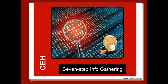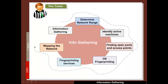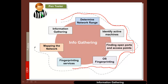So what is the seven-step information gathering process? For a pen tester we go through each of these stages, going from passive information gathering to more active ones. The first stage is basic passive information gathering, then determining the range of the network where our devices are, then identifying the active machines within those networks, then looking at open ports and possibly wireless access points, fingerprinting the operating system, fingerprinting the services running on the system, and finally writing the whole thing up as a report where we map the network infrastructure.